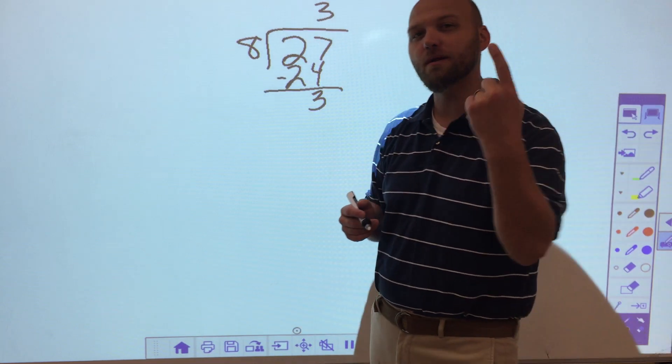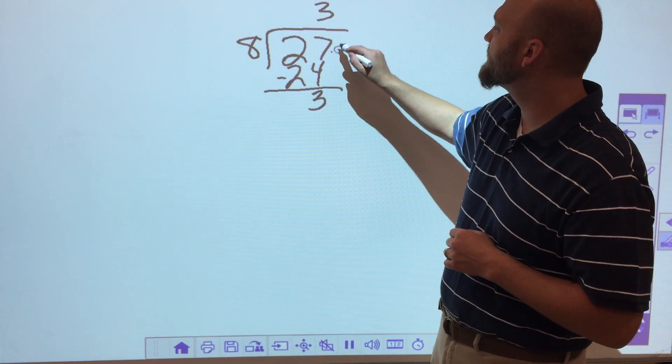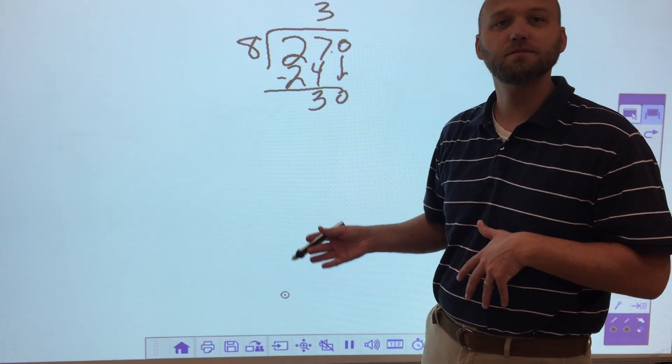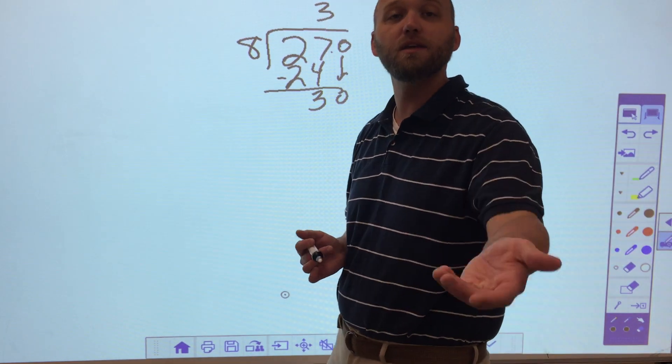Well, I have two options here. Number one, I can put a decimal in and a zero and then keep going. That's one option. And that's one that we're going to use quite often.